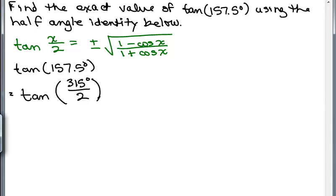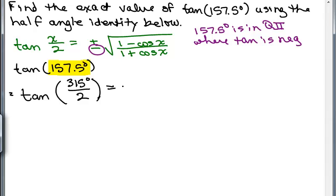Now we're looking for the tangent of this angle. So when I am looking at this formula, it says the tangent is either plus or minus. I have to decide whether it's going to be plus or minus. It's based on this angle. So where is 157.5 degrees? 157.5 degrees is in quadrant 2 where tangent is negative, so I'm going to choose the negative sign for this problem when I'm plugging it into this formula.